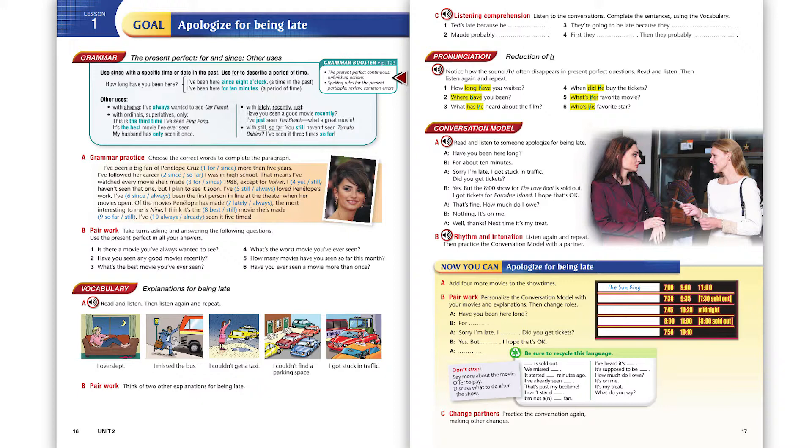1. How long have you waited? 2. Where have you been? 3. What has he heard about the film? 4. When did he buy the tickets? 5. What's her favorite movie? 6. Who's his favorite star?